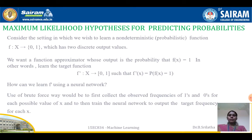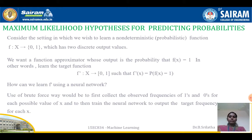Let us consider the setting in which we wish to learn a non-deterministic function, that is a probabilistic function f belonging to {0, 1}, which has two discrete output values, either 0 or 1. We want a function approximator whose output is the probability that f(x) = 1. We can learn the target function f using a neural network.